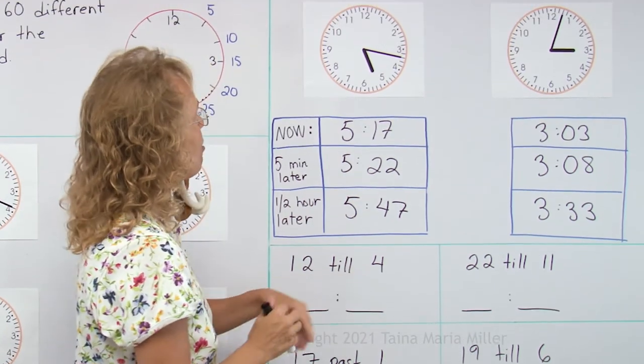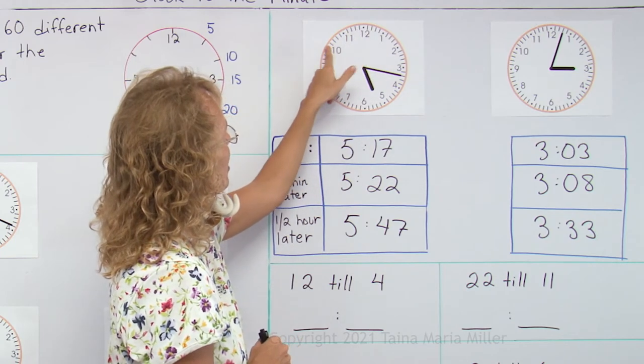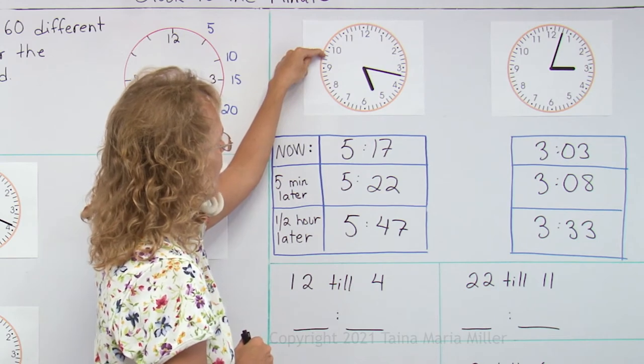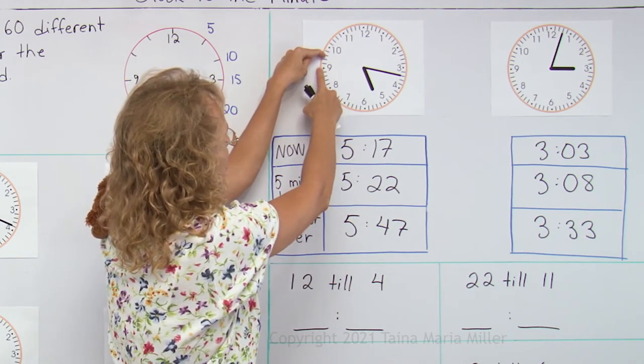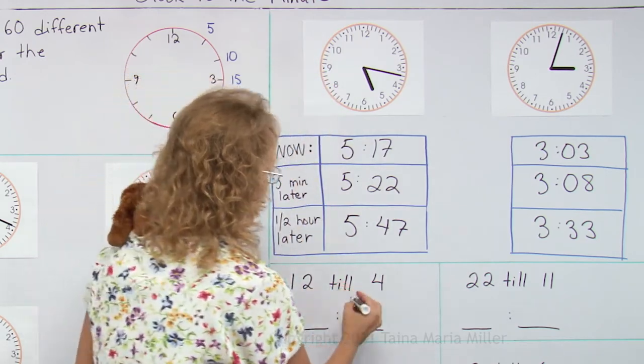We have 12 minutes till 4. So if you look here, this would be 5 minutes till, 10 minutes till, and two little lines. It's this one here. Okay, so in the hours and minutes way, this here would be 45 minutes, and 3 minutes more means 48. So 48 minutes.